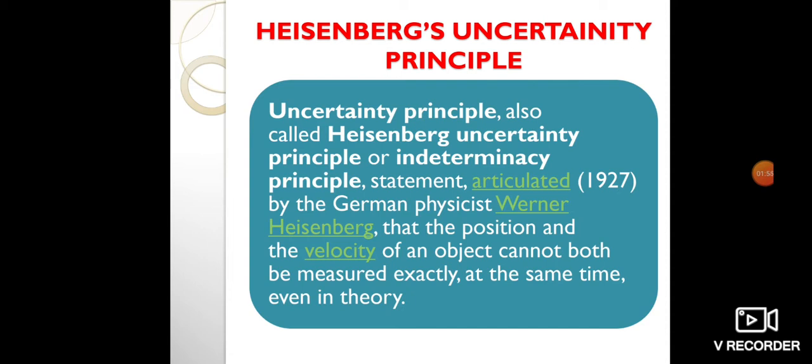For example, we can measure the position of a moving electron by scattering light or other electrons from it. Those probes have momentum themselves, and by scattering from the electron, they change its momentum in a manner that loses information. There is a limit to absolute knowledge even in principle.